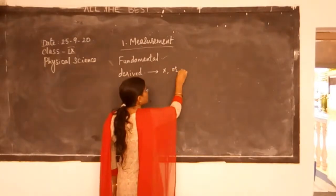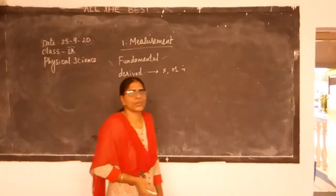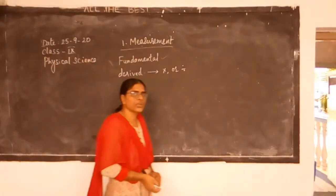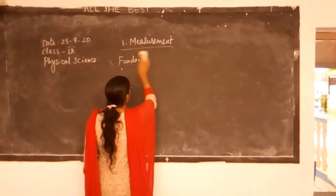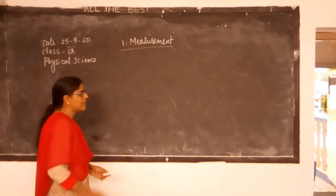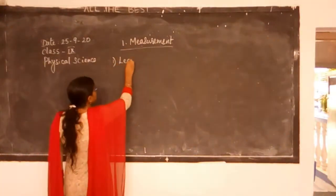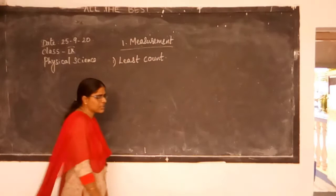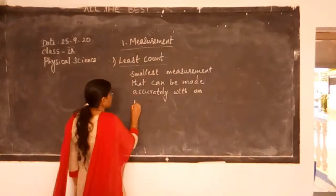Fundamental quantities are those quantities which do not depend on any other quantities. Whereas derived quantities can be obtained either by multiplying or dividing two or more fundamental physical quantities.